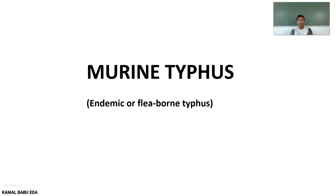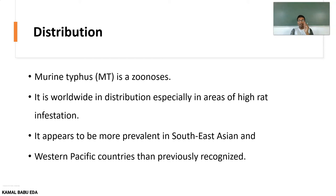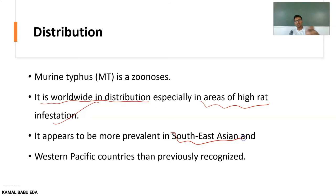The next type is Murine Typhus, also called endemic flea-borne typhus. This is a zoonosis and it is worldwide in distribution, especially in areas of high rat infestation. It appears to be more prevalent in Southeast Asian and western Pacific countries than previously recognized.